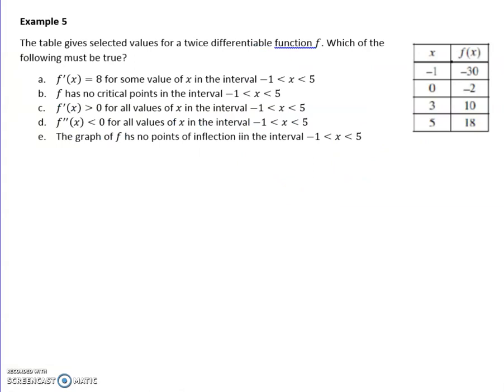In this last example, we have a table of values. They said it's twice differentiable, which means that it's continuous, and you can take the derivative. Which of the following must be true? Okay, so the first thing that I notice is I go from negative 1 to 5, and I start in the negatives. And according to my data, I'm kind of going up. But remember, your graph could go up and back down and so on and so forth. This is just a possible set of values.